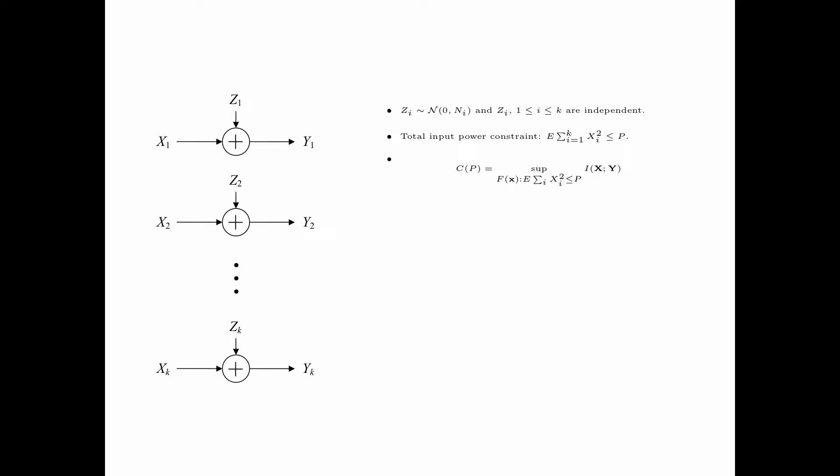The channel capacity with input power constraint p is equal to the supremum of the mutual information between the input vector x and output vector y, over all input distributions f of x such that the expectation of the summation i of xi squared is less than or equal to p.